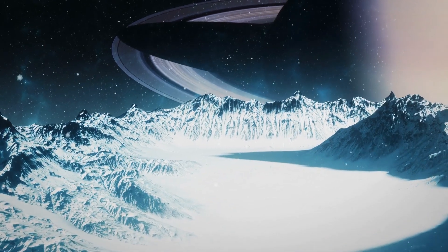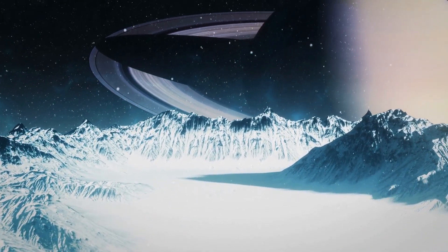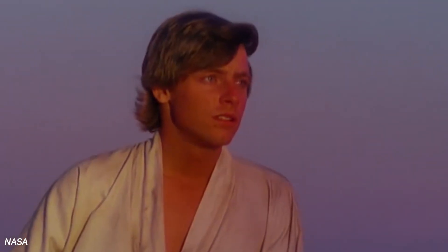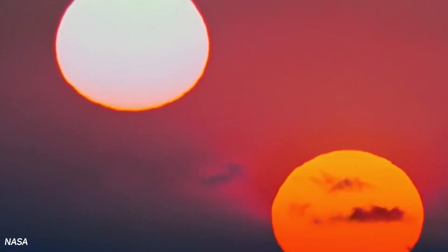There are other exoplanets which are the size of Jupiter and are revolving around not one, but two stars. This means that one could clearly see a binary sunset from one of these exoplanets.